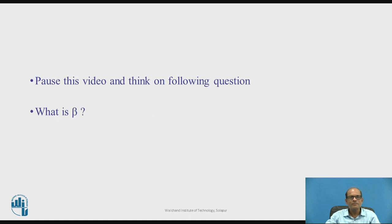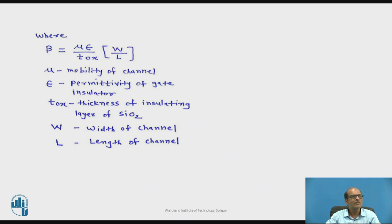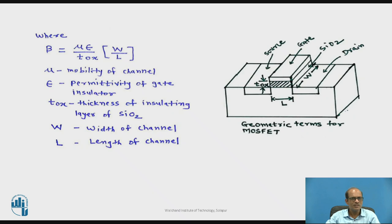Beta is the gain factor of the MOSFET, given by: beta = (mu × epsilon / TOX) × (W / L), where mu is the mobility of the channel, epsilon is the permittivity of the gate insulator (the SiO2 layer), TOX is the thickness of the oxide layer, W is the width of the channel, and L is the length of the channel. These geometric terms TOX, W, and L are shown in the diagram. The diagram shows the geometric structure of the MOSFET — the substrate with drain and source obtained by diffusion, and an insulating SiO2 layer shown by dashed lines.